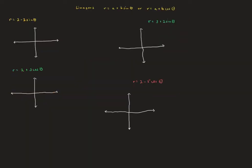Now let's look at limaçons. Limaçons have the form r equals a plus b·sinθ, or r equals a plus b·cosθ, with a plus or minus. For limaçons, we plot the quadrantal angles: θ equals 0, π/2, π, and 3π/2. We find the r values at each, plot those points on the x- and y-axes using rectangular coordinates, and then think about how to connect them.